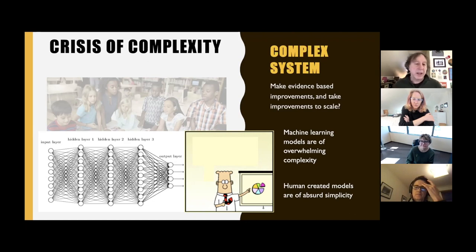So we can form models that might give fairly accurate accounts of what's happening in these environments, but we don't understand them. And so then it's very hard to understand how to tweak them, understand how to describe them. The other side of this crisis of complexity is that we make these human created models, but they're of such simplicity that we know they're wrong. We know they're absurdly simplistic. And we need to find some way of resolving this crisis of complexity because without that we can't really articulate evidence-based improvements and then take those improved interventions to scale.